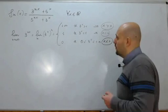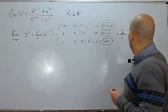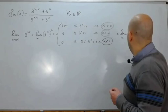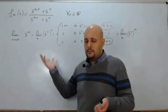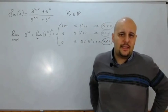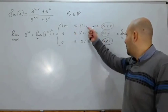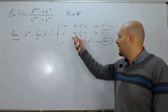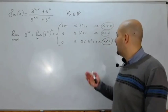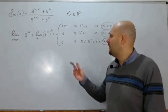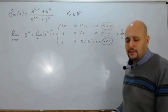Lo stesso discorso vale per il limite di (5^x)^n: 5^(nx) varrà +∞ se 5^x > 1, quindi se x > 0; varrà 1 se 5^x = 1, quindi x = 0; varrà 0 se 5^x è compreso fra 0 e 1, quindi x < 0.